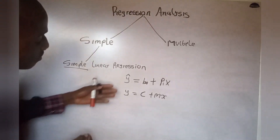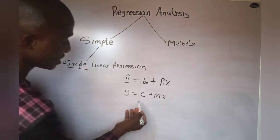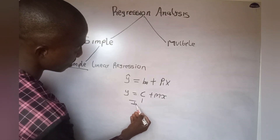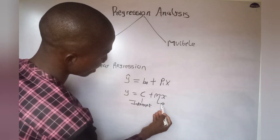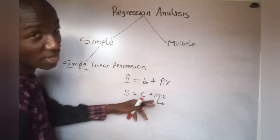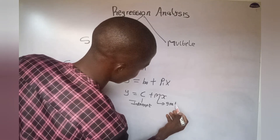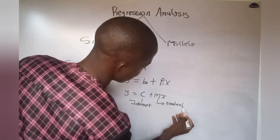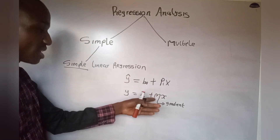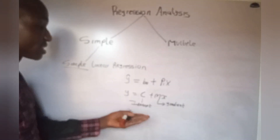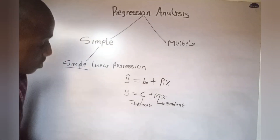From the equation of a straight line, c is the intercept, and m is the coefficient of x. The coefficient of x in the equation of a straight line is known as the gradient. So m is the gradient; m can assume any value, and c is the intercept — the constant of the equation.